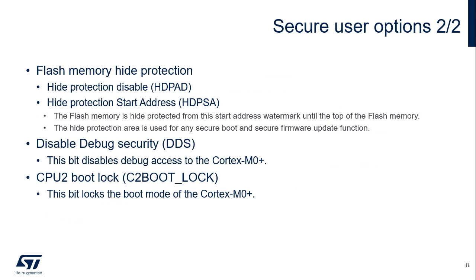The flash memory hide protection disable (HD-pad) bit enables the hide-protected area in the Cortex-M0 Plus secure flash area. The hide protection start address defines the watermark from which the flash memory is hide protected. The secure boot and secure firmware update are located in this area. It is executed once after a Cortex-M0 Plus reset and subsequently hidden until the next reset. Debug access to the secure Cortex-M0 Plus and all secure resources is controlled by the debug-disable security bit (DDS). The CPU boot lock bit allows the creation of a root of trust for the Cortex-M0 Plus boot.